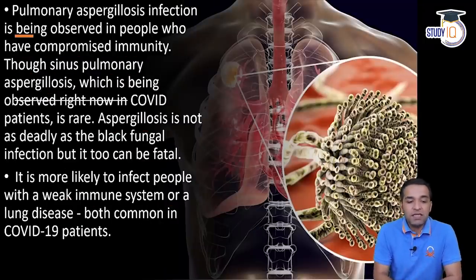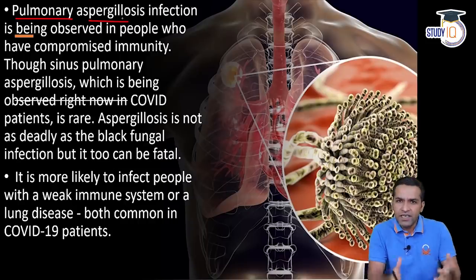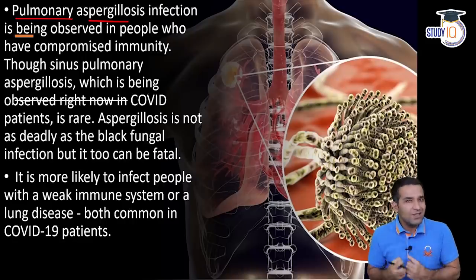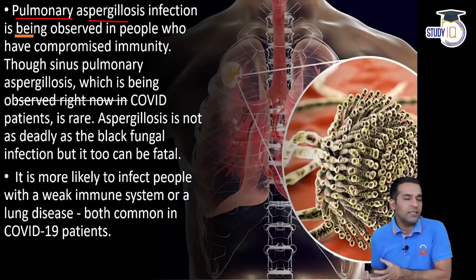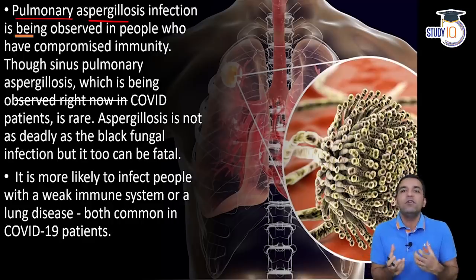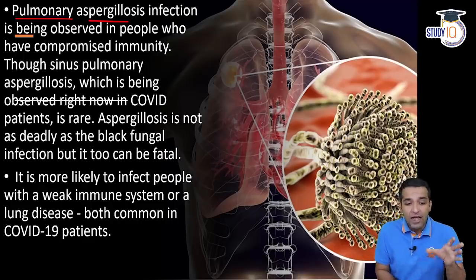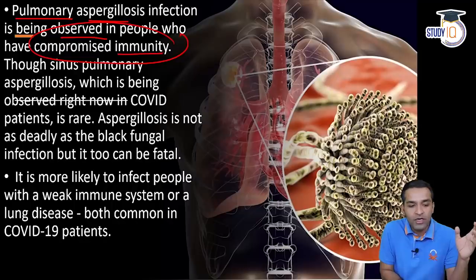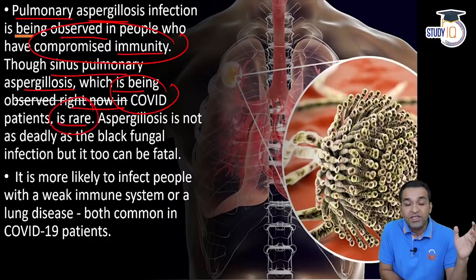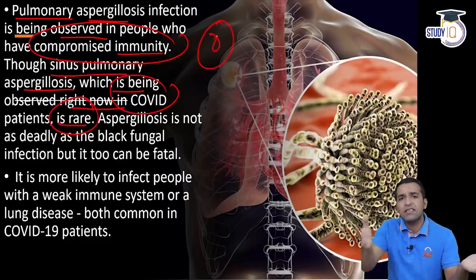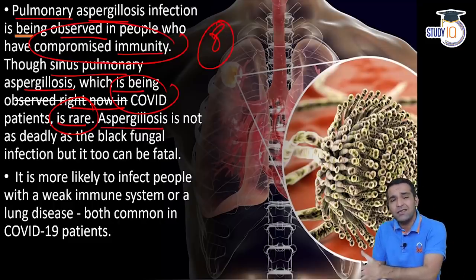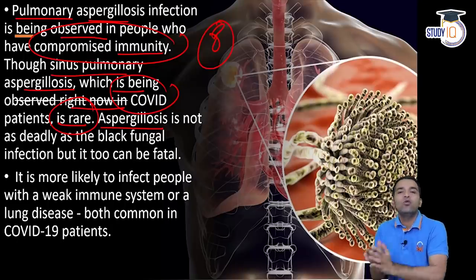Ab aspergillosis ka matlab kya hota hai - ye jo pulmonary - dekhe, jo ye jitne bhi fungal infections hain, ye faefdon par ya jo saans ki jinko bimariyaan hain unko hi effect kar rahi hain is samay. Saans ki bimariyaan aur jo immune system ka weak hona hai - ye donon ki donon COVID-19 ki pehchaan hain. COVID-19 ke andar immune system bhi weak hota hai aur faefdon ki ya saans ki disease hoti hai. Pulmonary aspergillosis infection unhi logon mein observe kiya jaa raha hai jinki immunity compromise ho chuki hai. Though sinus pulmonary aspergillosis which is being observed right now in COVID-19 patients is rare - kyunki 8 hi cases aaye hain, black fungus ke toh 11,000 tak aa chuke hain - inke abhi 8 hi aaye hain, rare hai. Aspergillosis definitely jitna black fungus deadly hota hai, fatal hota hai, nukasaandeh hota hai utna toh nahi hai, but again agar isko sahi time par nahi pehchana gaya toh ye bhi fatal ho sakta hai.